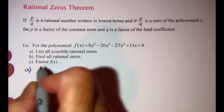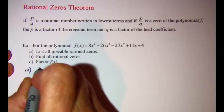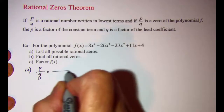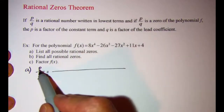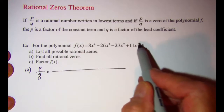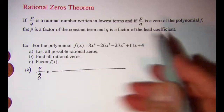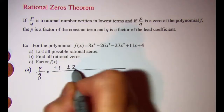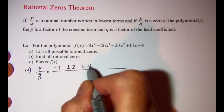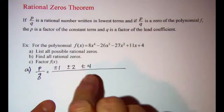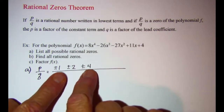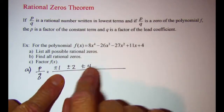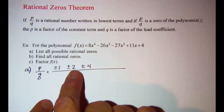Our possible rational zeros are going to come from a list of fractions. For P, I want to get factors of my constant term. Factors of 4 are plus or minus 1, plus or minus 2, and plus or minus 4. It helps to go in order and use pairs to make sure you aren't missing any — 1 times 4 gives me 4, and 2 times 2 gives me 4.